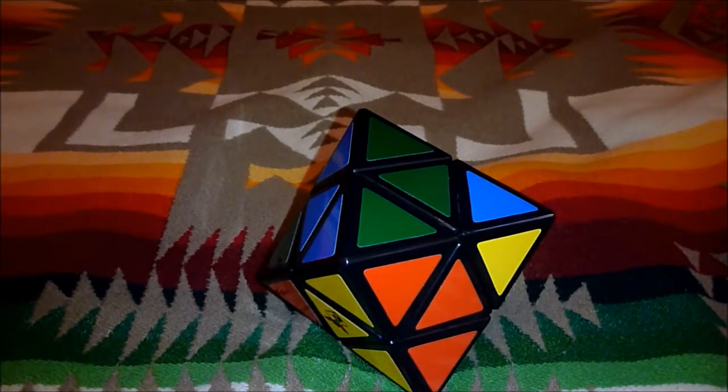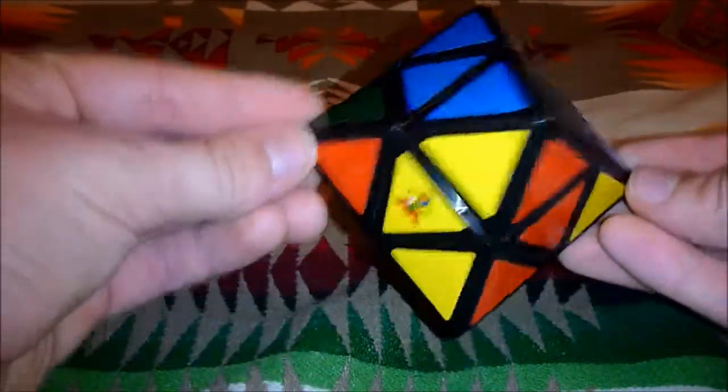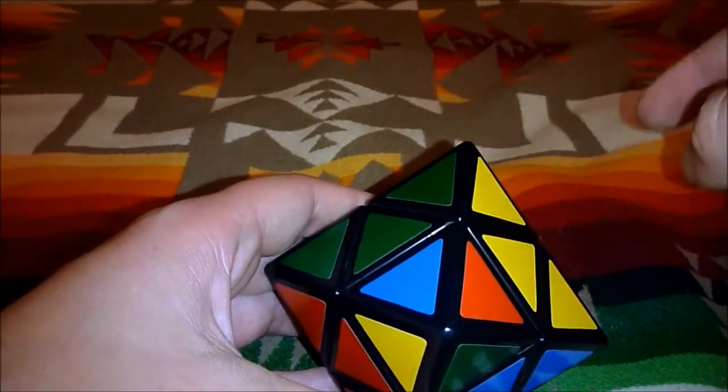There are two different types of parity errors you can get. You can get one where the two pieces that are flipped are opposite of each other, or you can get one where the two pieces are flipped or adjacent to each other, such as this piece right here being flipped.